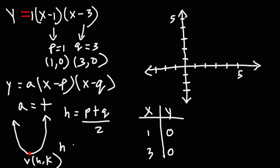To find h, we just need to add 1 and 3 and divide by 2. 1 plus 3 is 4, and 4 divided by 2 is 2. So the x-coordinate of the vertex is 2.